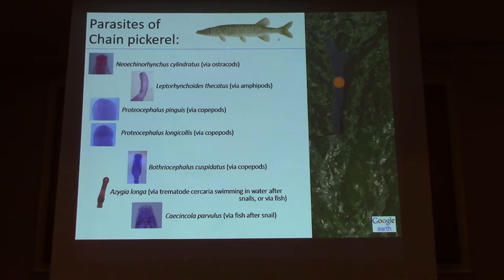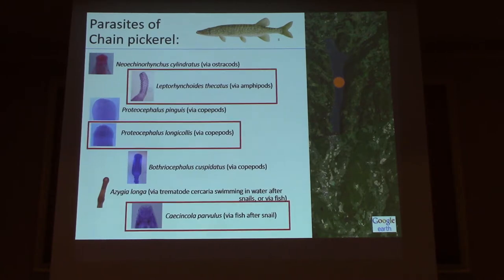Another example is chain pickerel. You have to be careful when looking at their parasites because they're such good piscivores — if you find a parasite in a chain pickerel, you don't necessarily know if it's a proper chain pickerel parasite or one that was in a fish it ate, simply trying to eke out some existence after ending up in the wrong gut. At least three species on the list are questionable; they probably aren't true chain pickerel parasites and don't reach sexual maturity there.